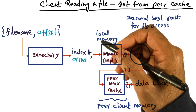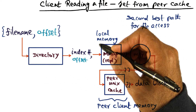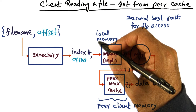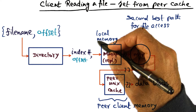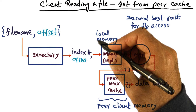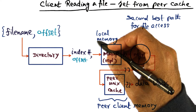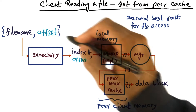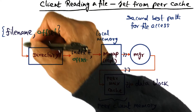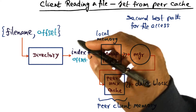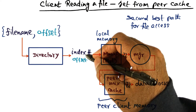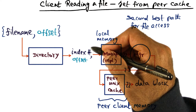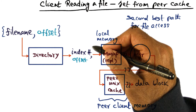Now it is possible that a file is shared, or the same file is being read by different clients at different points of time, but in either case, there is a possibility that a particular file has been accessed by a client and therefore in the cache of that client. So the next possibility is that you start with the directory and don't find it in your local cache.